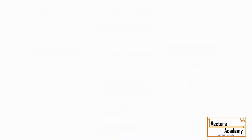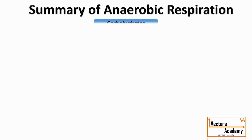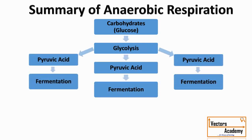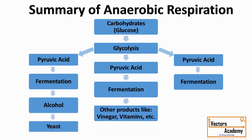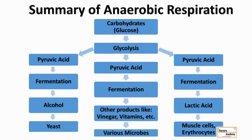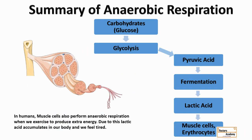As the name suggests, anaerobic respiration does not require oxygen. Many types of bacteria perform anaerobic respiration for production of their energy. Glycolysis and fermentation are the two major steps. The glucose is partially oxidized and produces pyruvic acid, which undergoes fermentation. After fermentation, the byproducts formed could be alcohol, lactic acid, or other products. Anaerobic respiration does not produce as much energy as aerobic respiration.